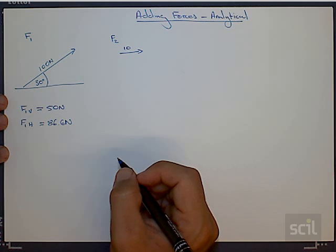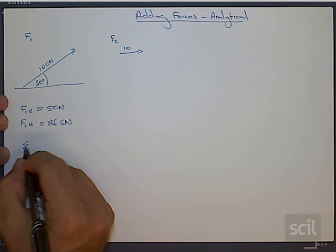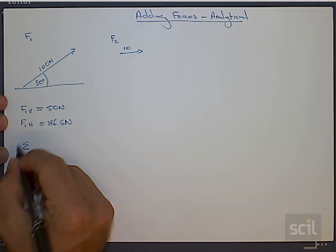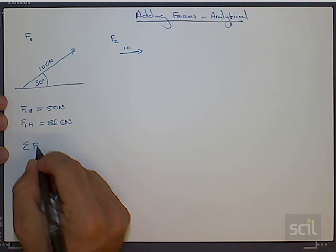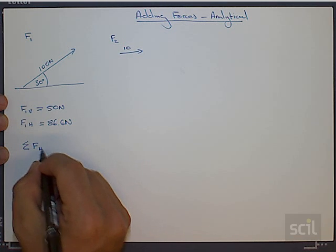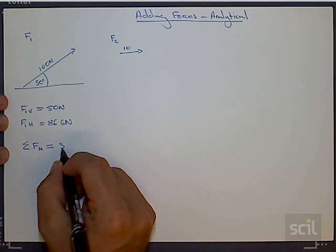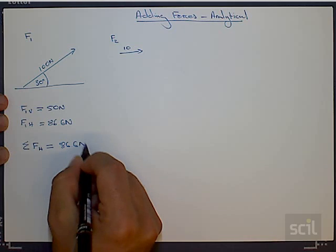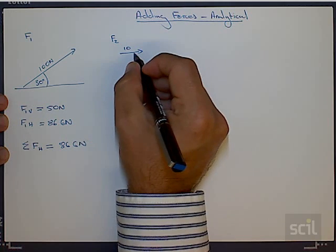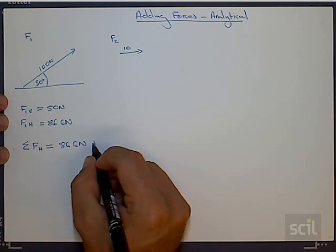But what we notice now about forces is if we want to sum them, we can also sum the horizontal and vertical components. So if I want to sum, and this is the notation for adding the forces which are all horizontal, they are this one here, 86.6 Newton force, and this one over here because it's also horizontal, plus 10.